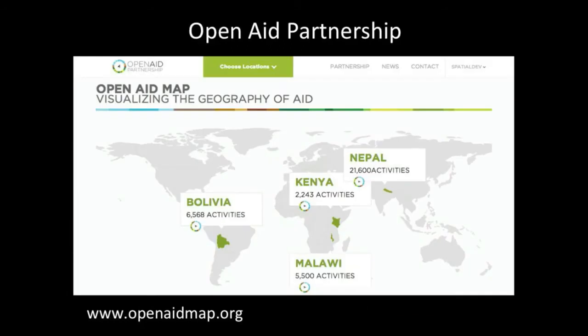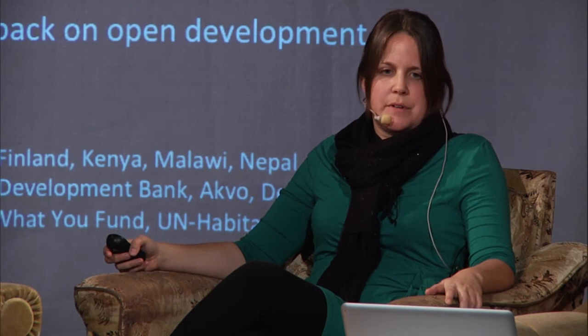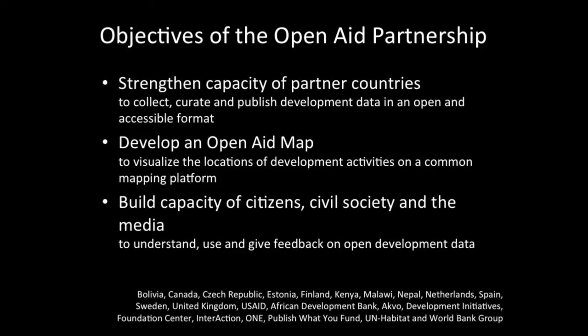Building on that is another initiative called Open Aid Partnership, which is what I work with specifically at the World Bank. It's also mapping of aid, but this time not only World Bank projects — all aid donors. So far we've been working in four countries: Bolivia, Kenya, Nepal, and Malawi. This is our new website that will be launched pretty soon, where you can see the location of aid. The objectives are to strengthen the capacity of partner countries to collect, curate, and publish development data in an open and accessible format, and we developed an open aid map to visualize the locations.